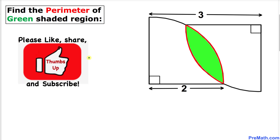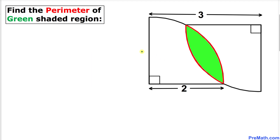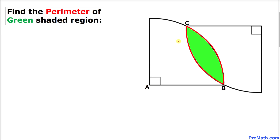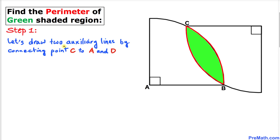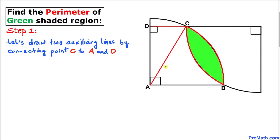Let's go ahead and get started with the solution. The first thing we do is label these points as A, B, and C. We then draw two auxiliary lines: connecting point C to point A, and introducing point D on the baseline, connecting C to D. Here's our resulting diagram.